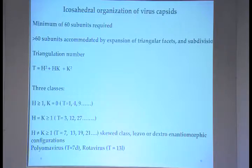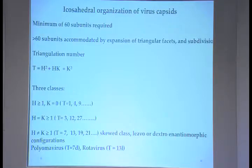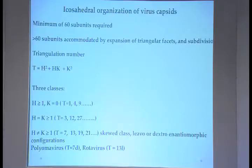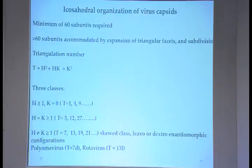There are three classes based on the type of triangulation numbers. If H ≥ 1 and K = 0, the triangulation numbers are 1, 4, or 9. If H and K are both more than 1, triangulation numbers are 3, 12, 27, etc. There is also a skewed class where H and K are both more than 1 but not equal, giving either levo or dextro enantiomorphic configurations — so you must specify T=7 dextro, or for rotavirus, T=13 levo.